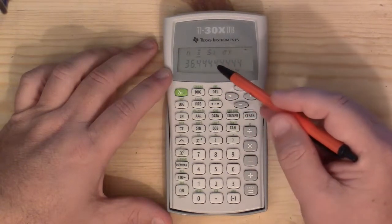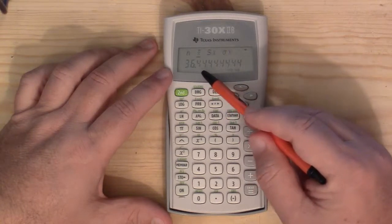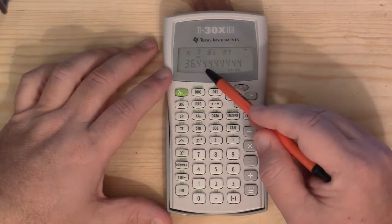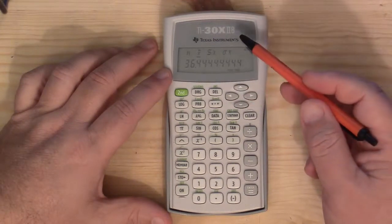that's sample mean which is also the same formula for population mean, and rounded to two decimal places our answer would be 36.44. And that's how you find the mean on a TI-30X2B.